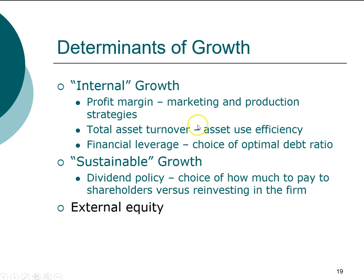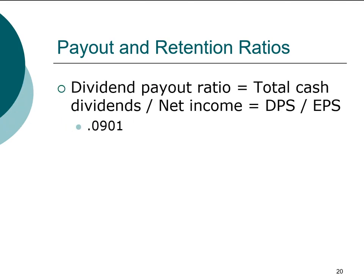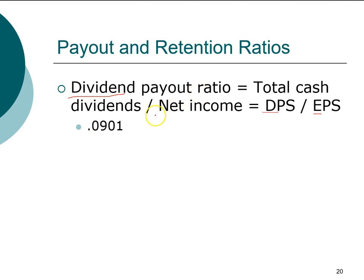Dividend policy plays an important part, so we're going to look at that next. How much a firm pays as dividend and how much it keeps as retained earnings is called the dividend payout ratio. The dividend payout ratio is defined as total dividends divided by net income. Because dividends are often reported on a per-share basis, we also use: DPS (dividend per share) divided by EPS (earnings per share). In our example, this translates to 0.0901, meaning for every dollar the company generates in income, it pays out 9.01 cents as dividend.